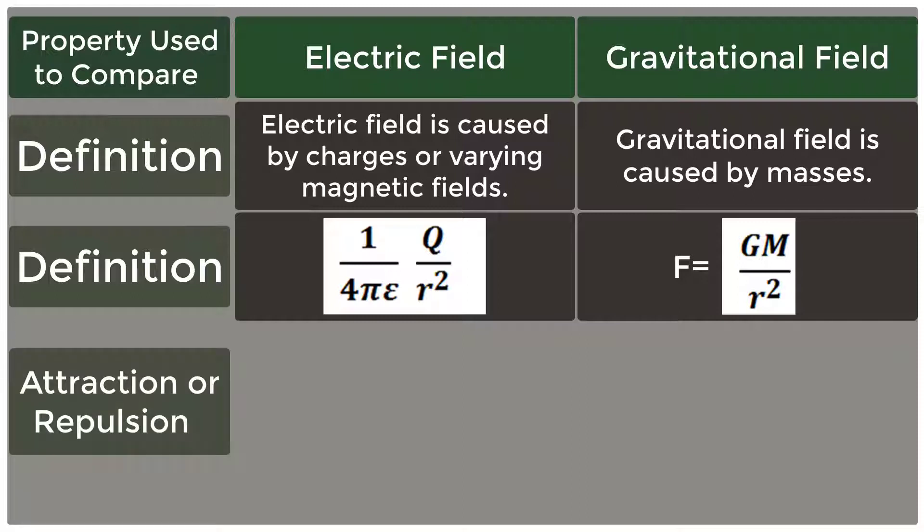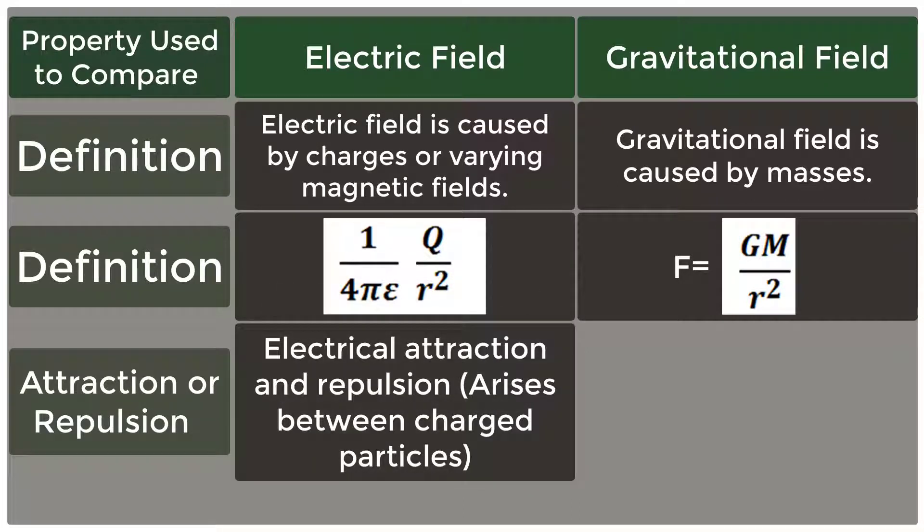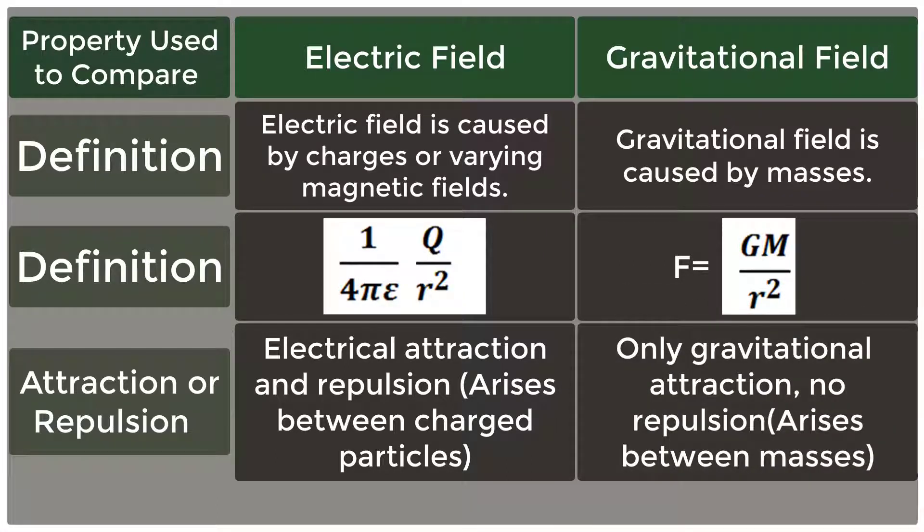Attraction or Repulsion: Electrical attraction and repulsion arises between charged particles, whereas only gravitational attraction, no repulsion, arises between masses.